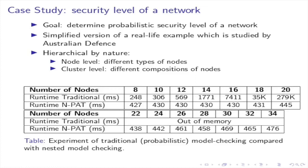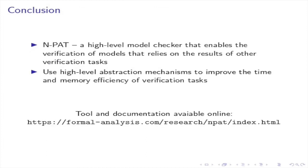The results are displayed in the table. When using traditional models, the runtime of the verification quickly grows. In fact, using the traditional approach, we were not able to determine the security level of a network with more than 20 nodes. In contrast, when using the nested model approach, the runtime verification growth remains manageable even as the size of the network increases. In conclusion, I've presented NPAT, a high-level model checker that enables the verification of models that rely on the result of other verification tasks — a novel concept which aims to use high-level abstraction to improve the time and memory efficiency of verification tasks. NPAT, its source code, and related documentation are available online.